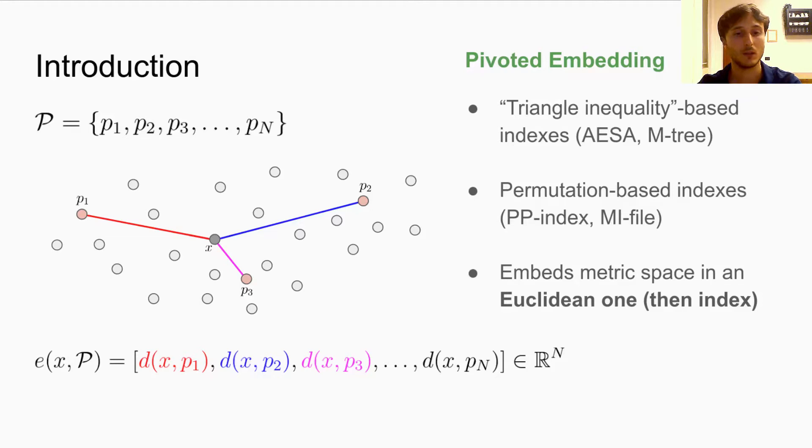But most importantly, this pivoted embedding provides a way to embed a metric object in a Euclidean space that is easier to index and to work with in general with respect to metric spaces.